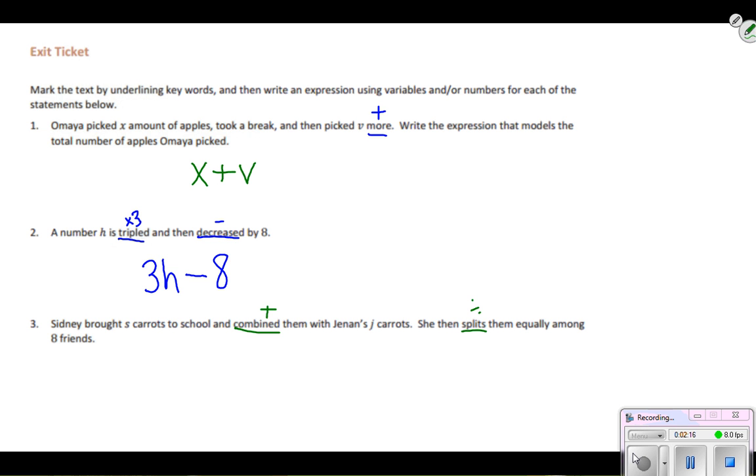Let's go ahead and start with the first part. We have s carrots combined with Jenin's j carrots, so I'm going to write it like s plus j. Then division can be used as a fraction bar, divided by eight friends equally. I can write it like that.